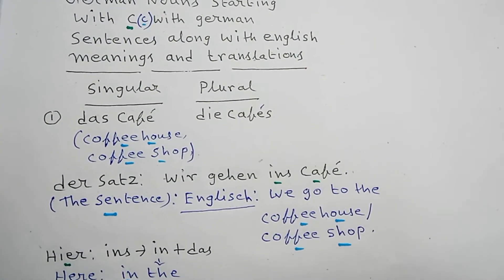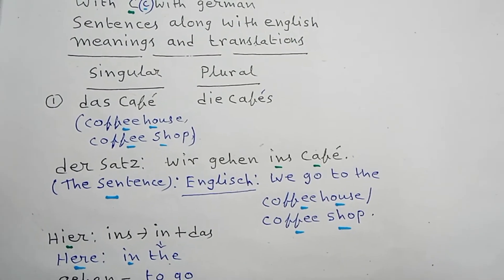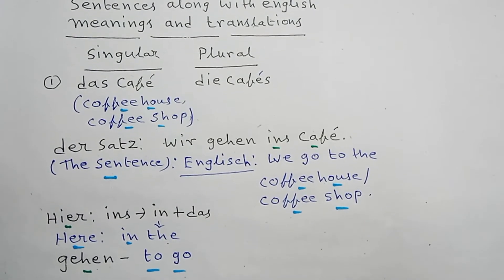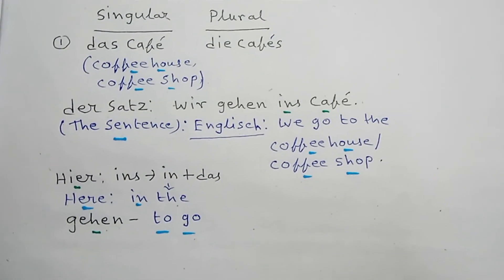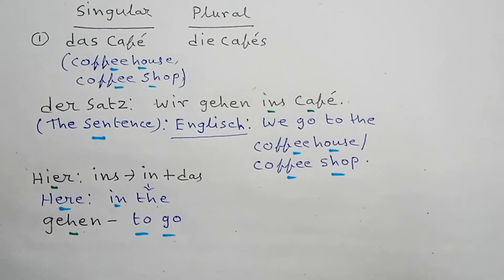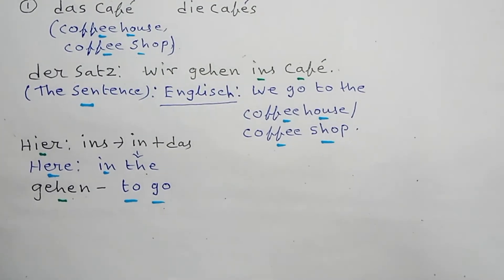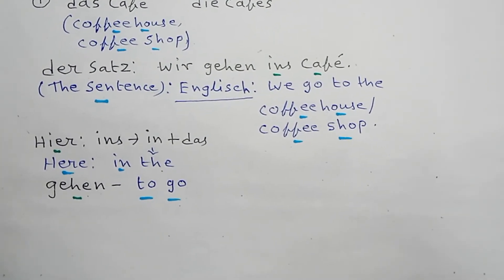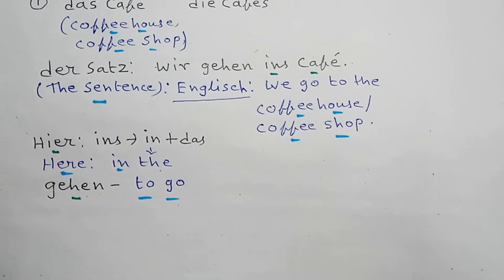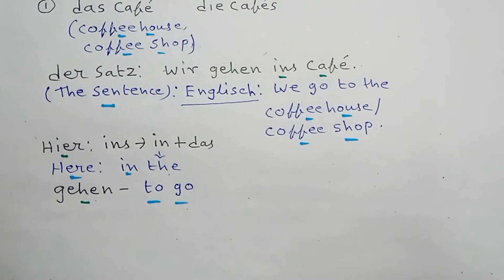Singular, plural. Number one: Das Café, plural die Cafés. Das Café, English meaning: coffee house or coffee shop. Now the sentence in German: Wir gehen ins Café. English: We go to the coffee house or coffee shop. Here 'ins' is 'in' plus 'das', meaning 'in the'. Gehen is the verb 'to go'.